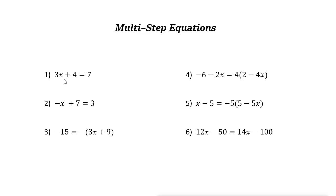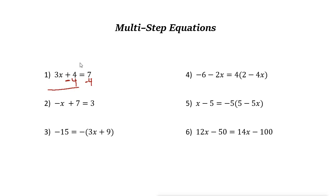The next step, we need to use the inverse of addition or subtraction. This one is 3x plus 4, so 4 is added to this part. We need to remove it from this side — so minus 4. The inverse of addition is subtraction. But you need to do the same thing for both sides, so this side of the equation: